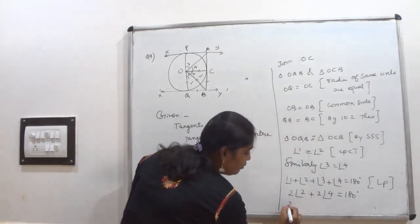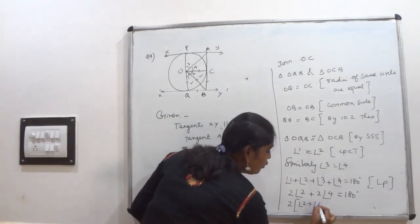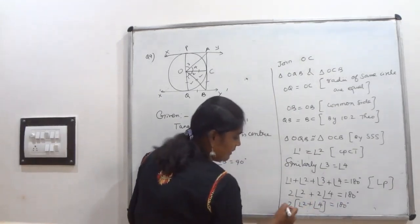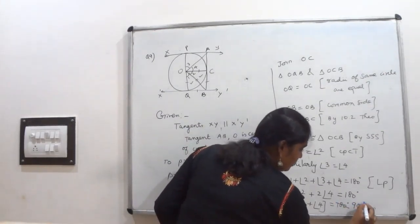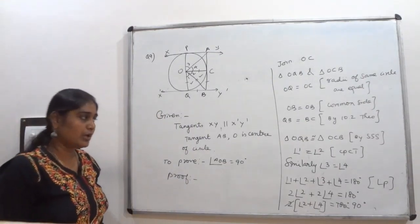Then 180 divided by 2 gives you 90 degrees. So angle 2 plus angle 4 equal to 90 degrees.